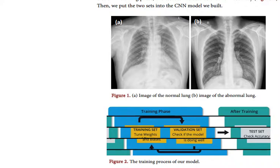Convolution neural network, or CNN, a class of deep neural network most commonly used in visual image analysis, has become one of the most influential innovations in the field of computer vision. In all research, a system is required which allows the computer to extract features and recognize images of human lungs,